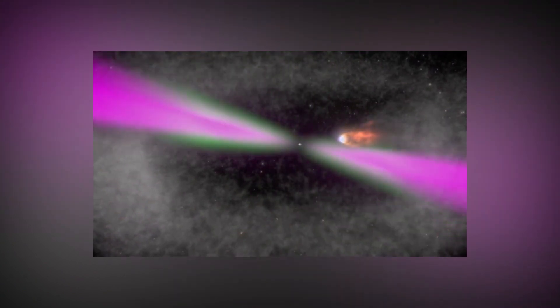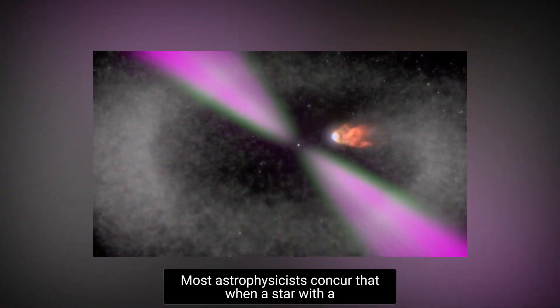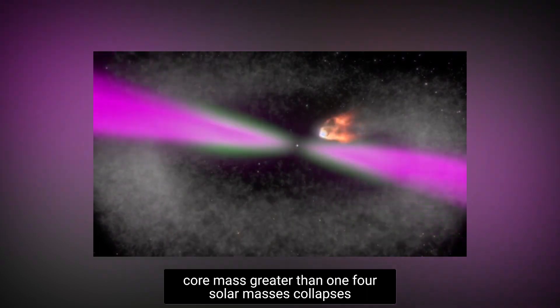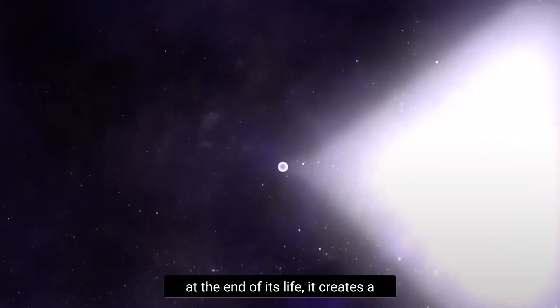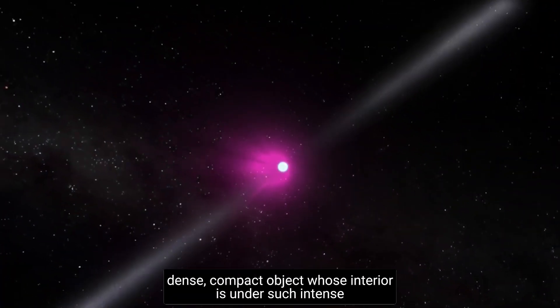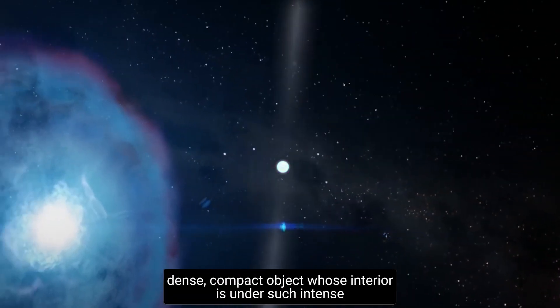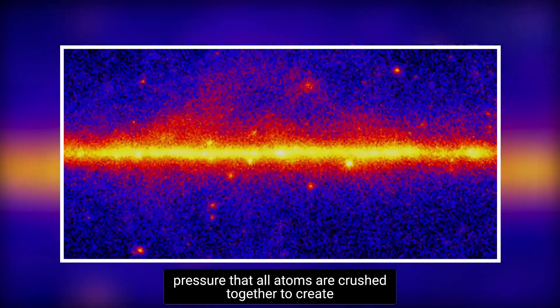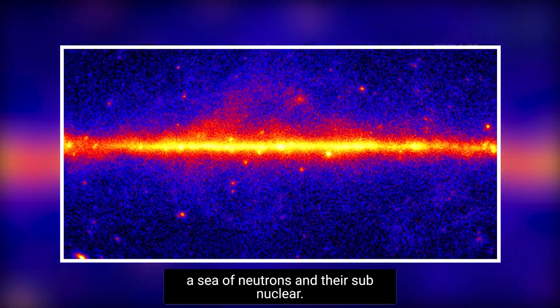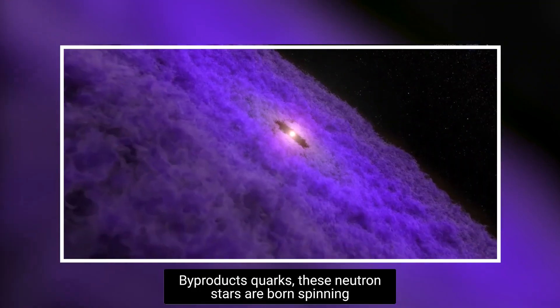How big can they become? Most astrophysicists concur that when a star with a core mass greater than 1.4 solar masses collapses at the end of its life, it creates a dense, compact object whose interior is under such intense pressure that all atoms are crushed together to create a sea of neutrons and their subnuclear byproducts, quarks.